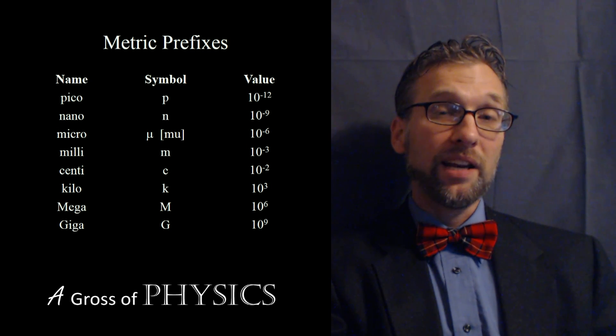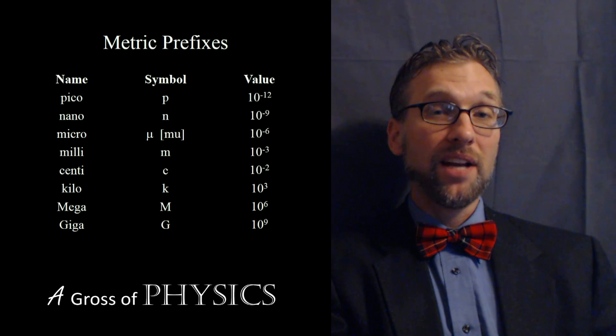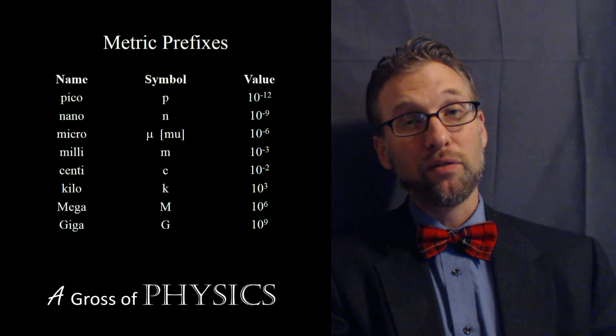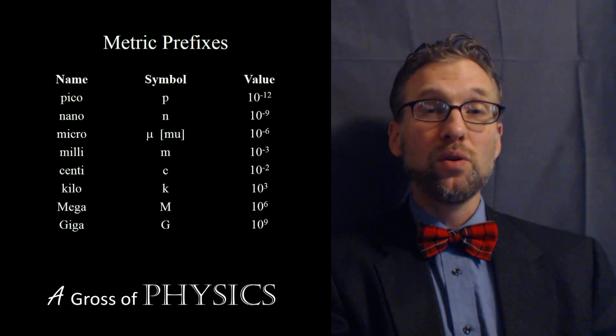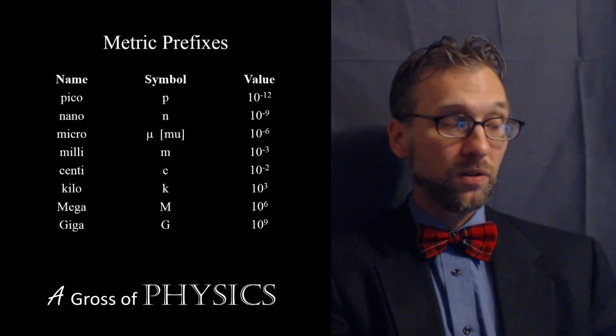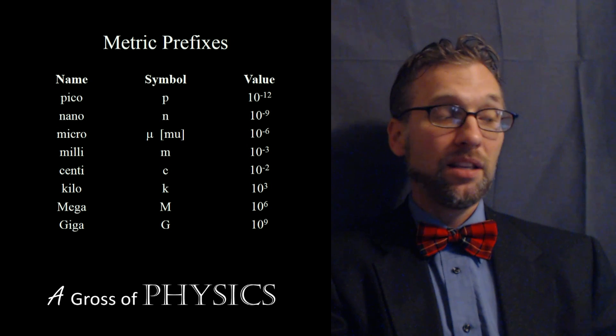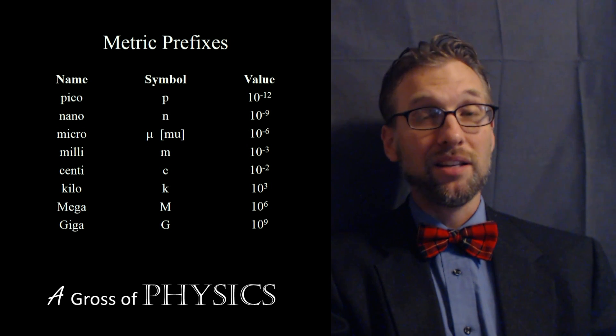Now the pico is 10 to the negative 12. And you'll notice a pattern here. The nano is 10 to the negative nine. Micro is 10 to the negative six. Milli is 10 to the negative three. The pattern is broken here. Centi is 10 to the negative two. And many of us will use centimeter rulers throughout the course. Kilo is 10 to the three. Mega is 10 to the six. And then giga is 10 to the nine.